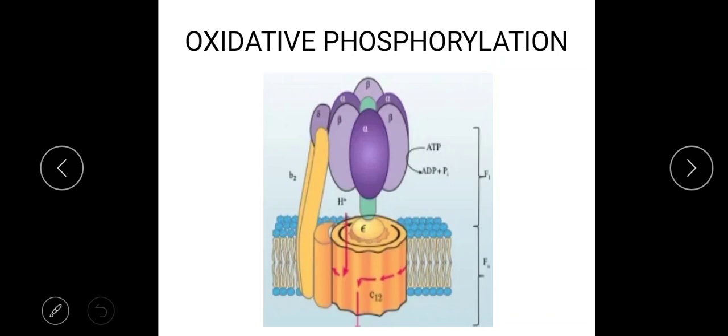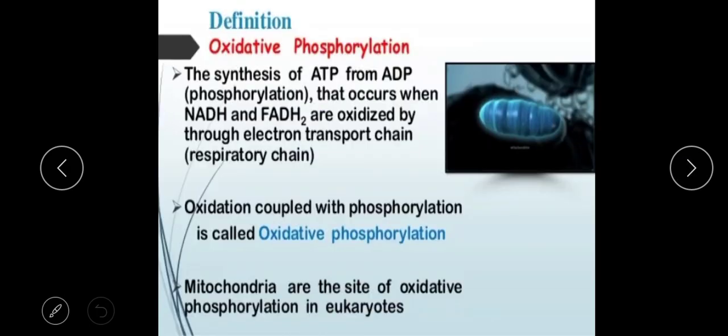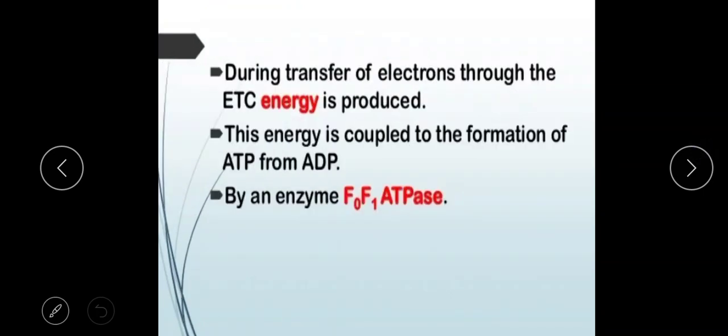Today we will look at oxidative phosphorylation. Oxidative phosphorylation means generating ATP from ADP, which occurs when our NADH and FADH2 are oxidized.